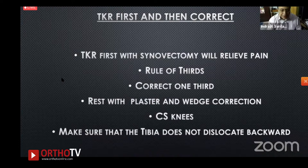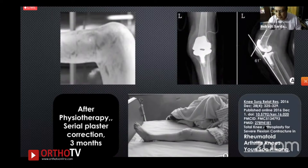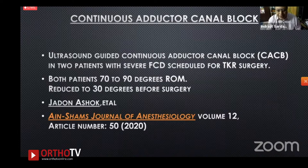A 90-degree fixed flexion contracture was corrected to 60 degrees intraoperatively, then serial cast correction over three months achieved further correction. This two-stage approach has been reported in papers from 2016 and 2019. It is an option for very extreme cases, though the presenter does not have personal experience with 60-degree residual FFD post-TKR.